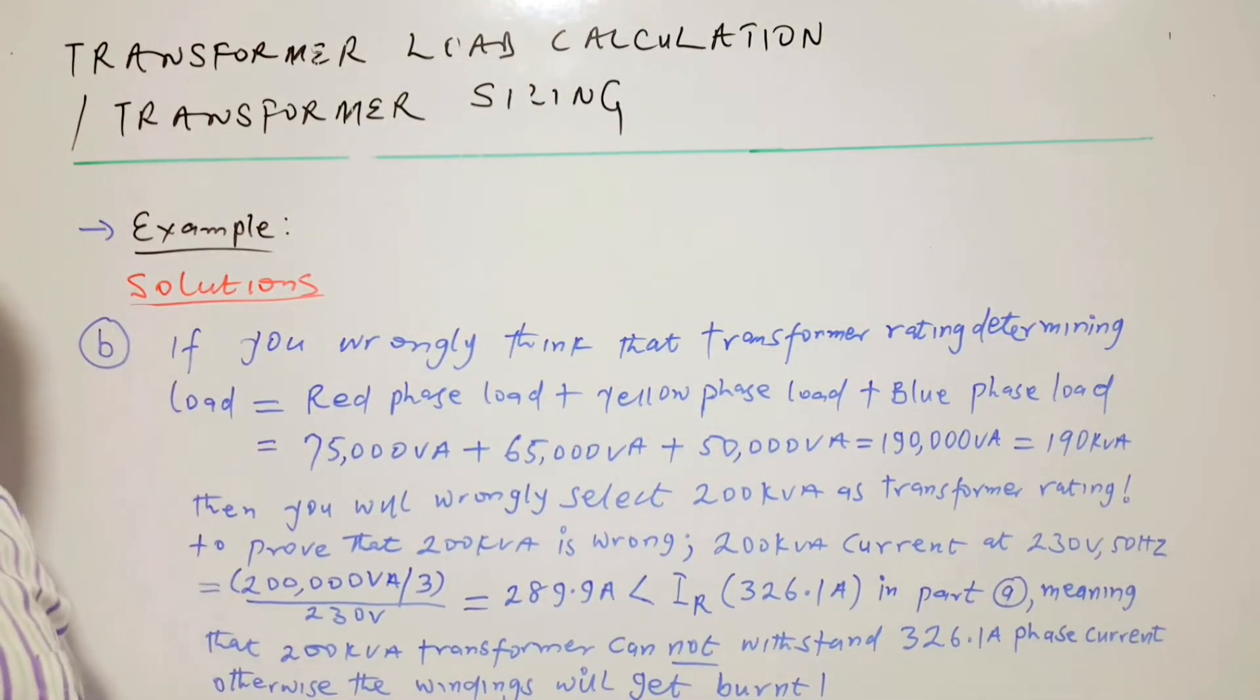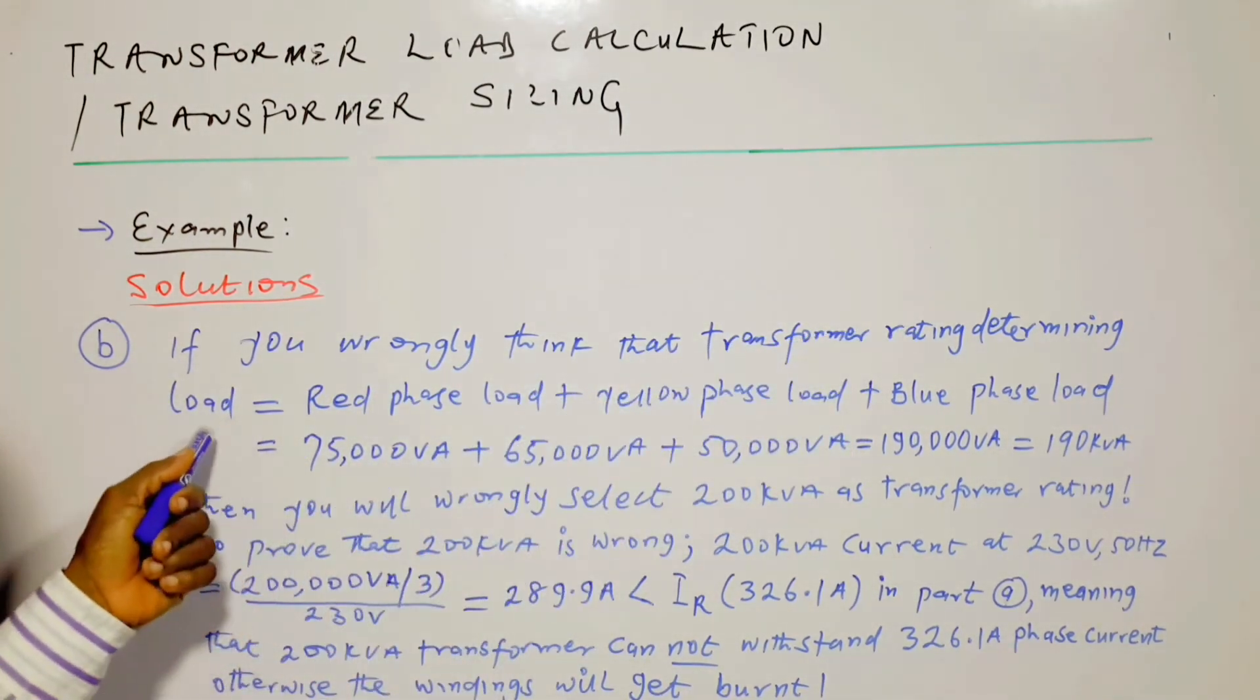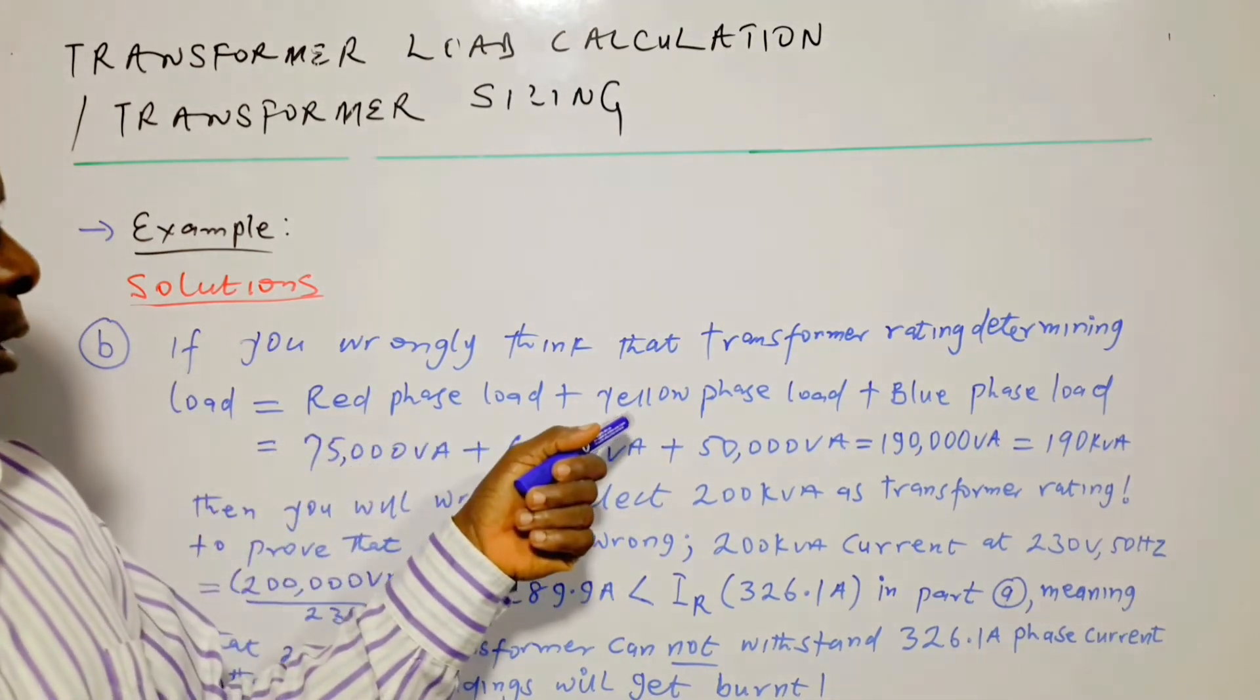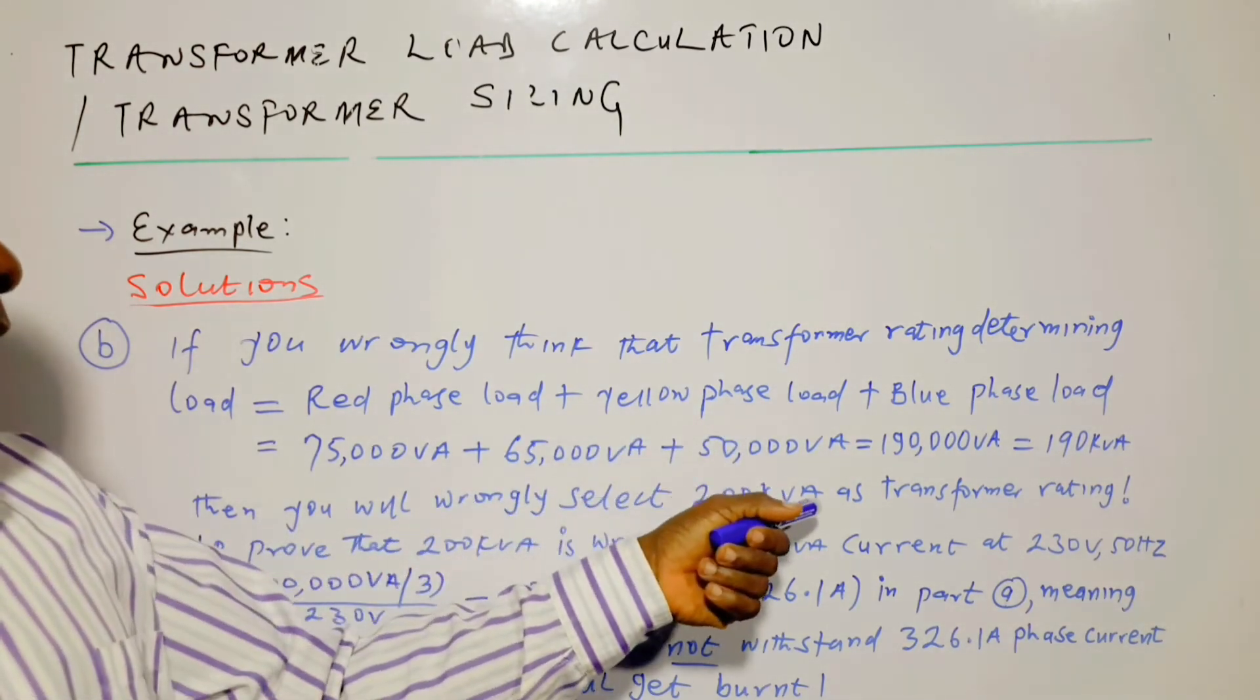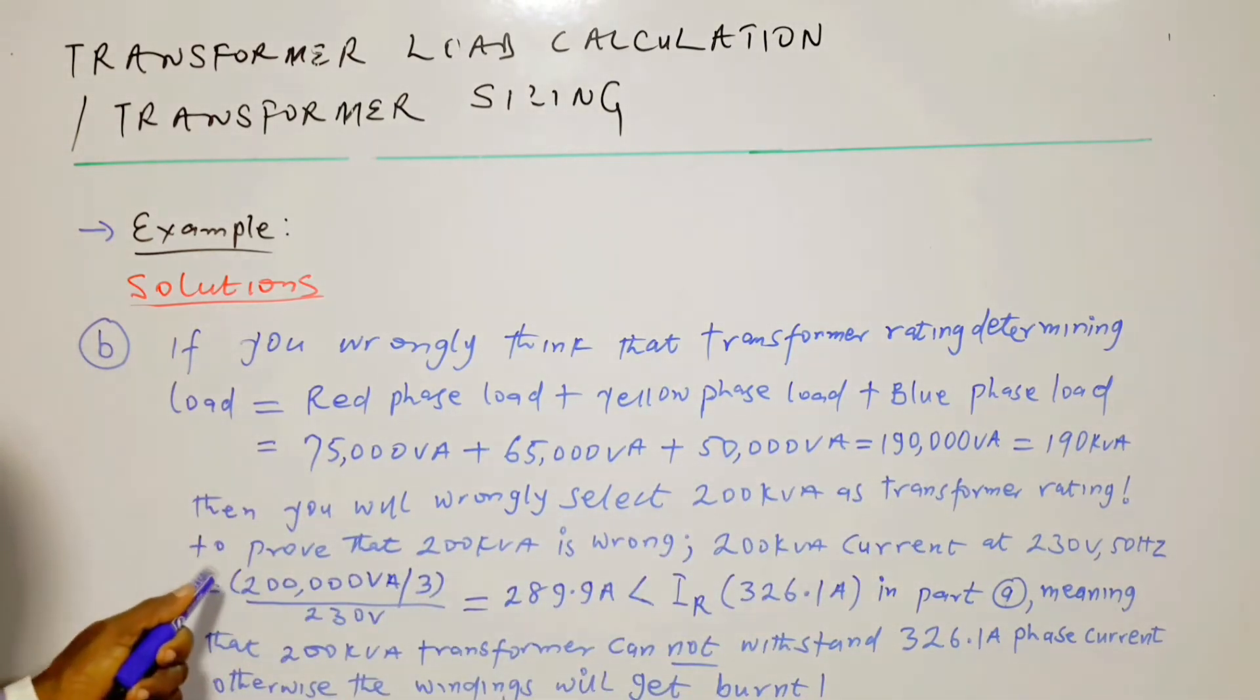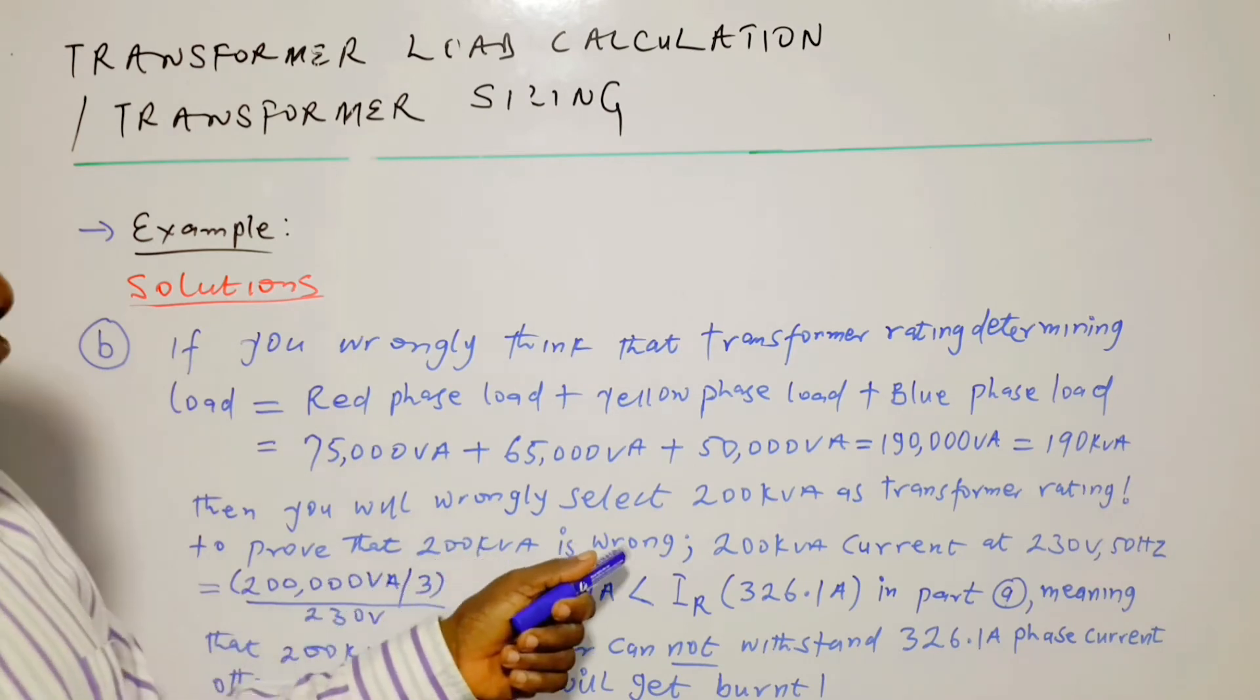Now coming to the B part. If you wrongly think that transformer rating determining load is equal to the algebraic sum of the phase loads, then you will wrongly select 200 kVA as transformer rating.